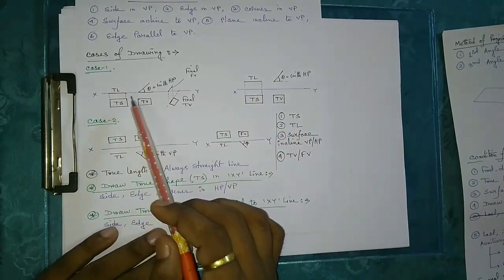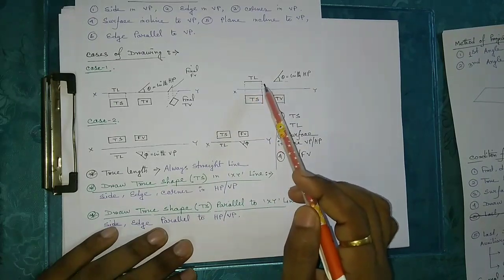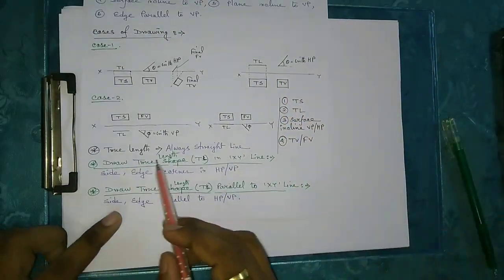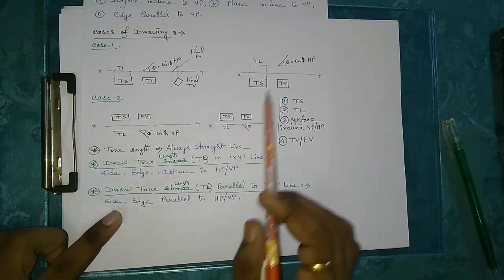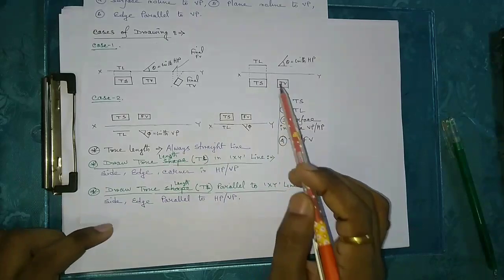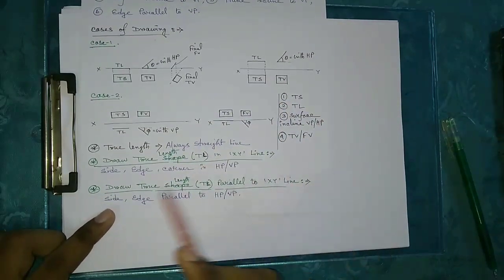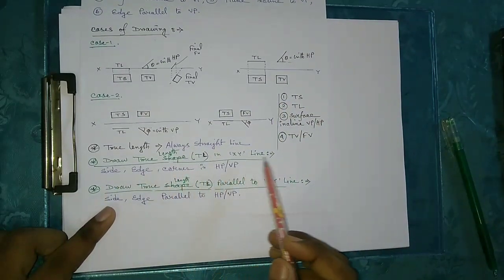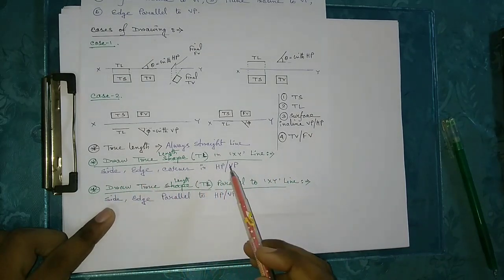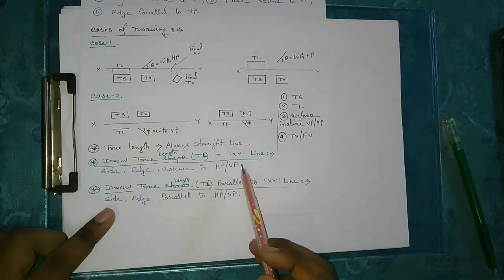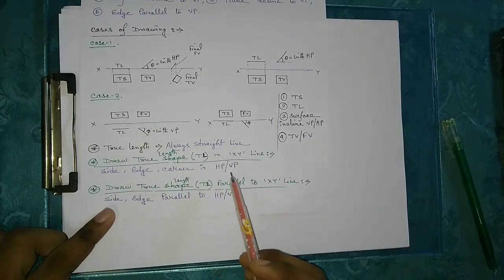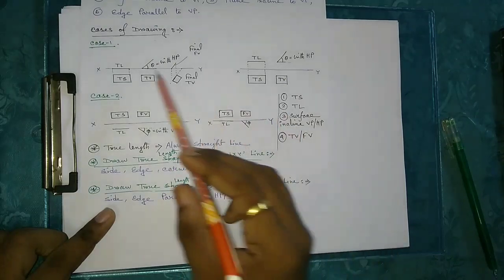True length is always a straight line. The true length is drawn in the XY line and parallel to the XY line. The condition for drawing the true length in the XY line applies to: side in HP, edge in HP, corner in HP, side in VP, edge in VP, and corner in VP. This condition means we draw the true length coinciding with the XY line.